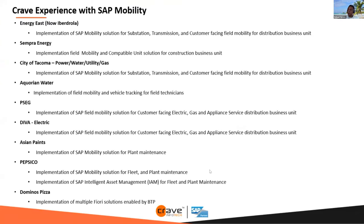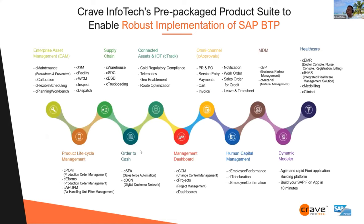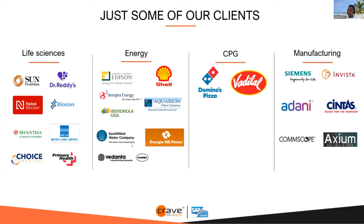Here is a list of some of our key customers where we have done SAP mobility, covering utilities, manufacturing, regulated, food and beverage, and other industries. Our methodology is slightly different from other organizations — we bring in the design thinking process into our implementation methodology. Finally, this is the list of all our apps on the SAP App Store: 20 plus apps with sub-apps totaling 50 plus, spanning EAM, product lifecycle management, supply chain, order to cash, and so forth, serving customers across life sciences, energy, CPG, and manufacturing.